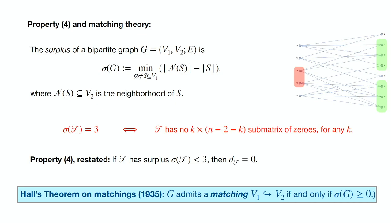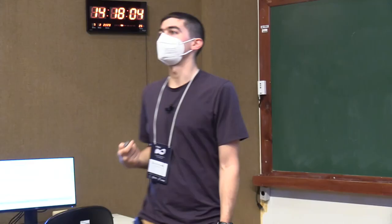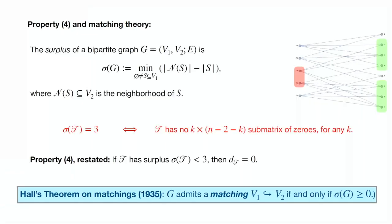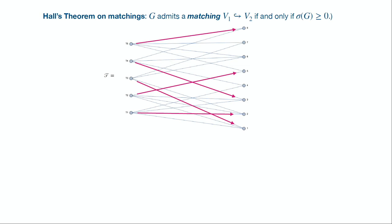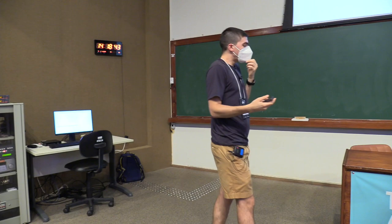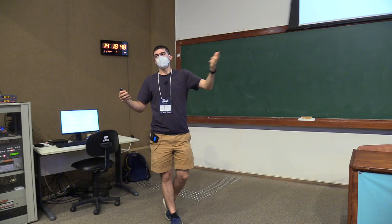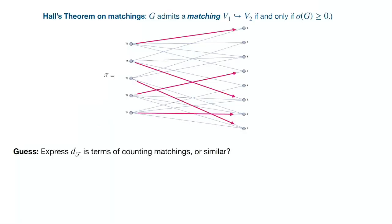This is classically useful because it appears in Hall's theorem, one of the most famous theorems in combinatorics on matchings. A bipartite graph admits a matching if and only if it has a non-negative surplus. So property 4 says: if the surplus is strictly less than 3, the cross-ratio degree is 0; if it equals 3, the cross-ratio degree may be non-zero and conjecturally is non-zero. Hall's theorem suggests we should be able to express our cross-ratio degree — which is non-zero only if surplus equals three — in terms of counting matchings.